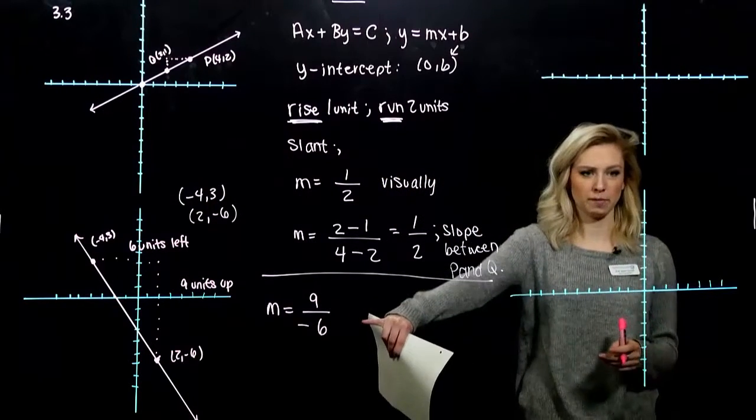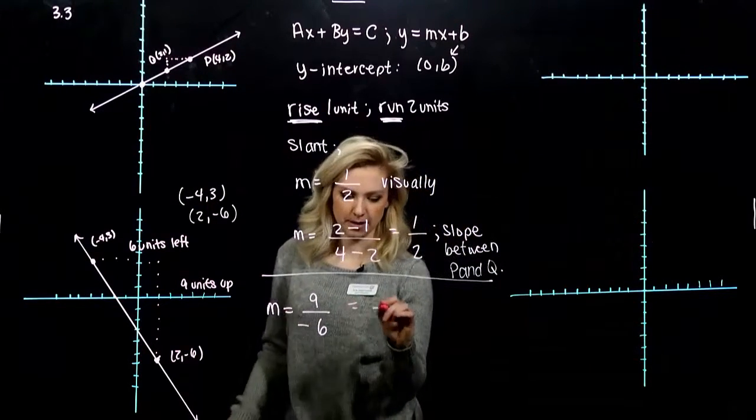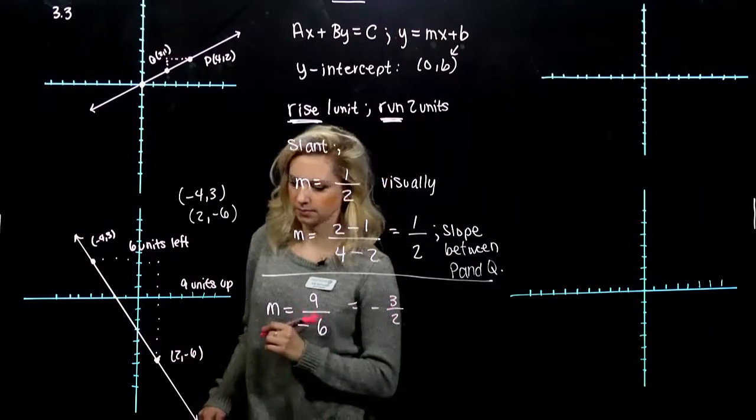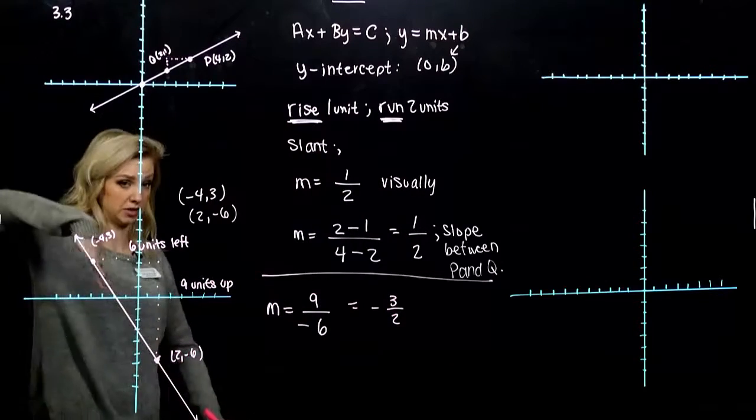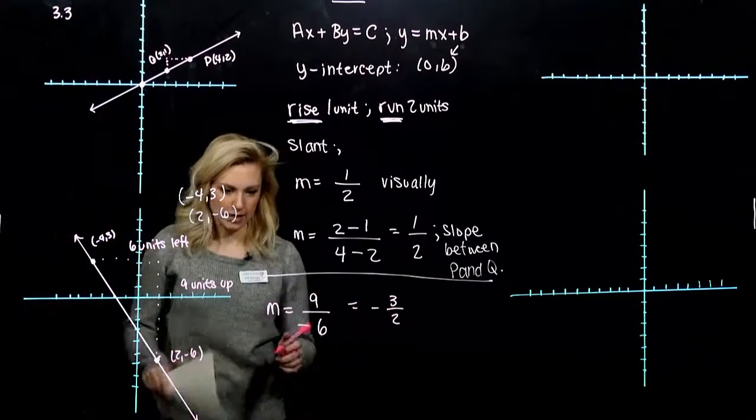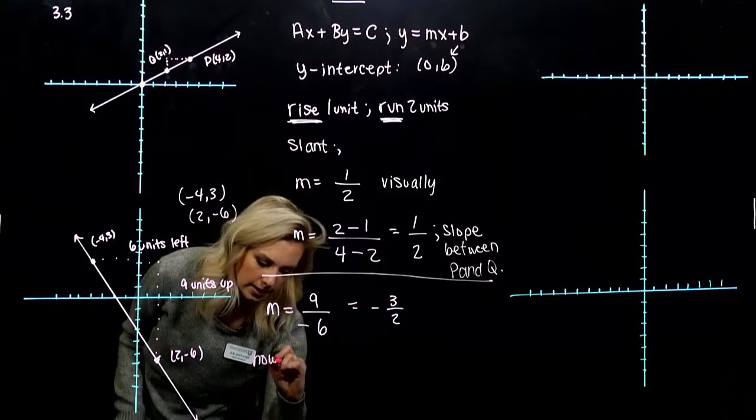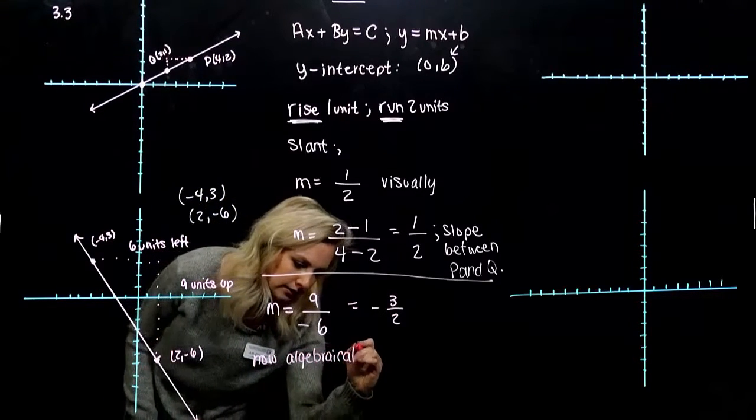Is there an easier way to report that? We can simplify. It's going to be the same as minus 3 halves. So it's negative, it fits our connotation of it's decreasing from left to right, so it should be negative. And now, algebraically, let's prove.